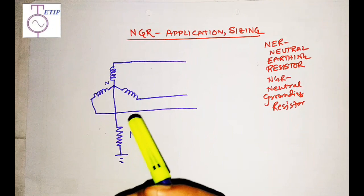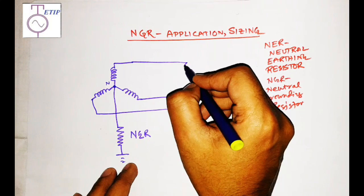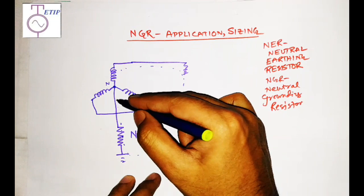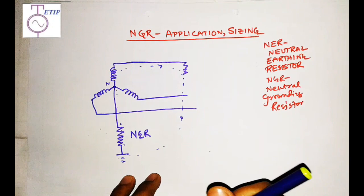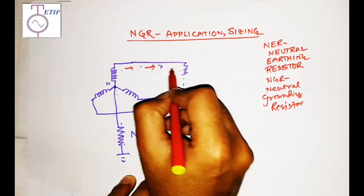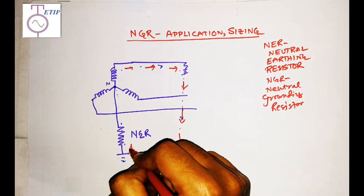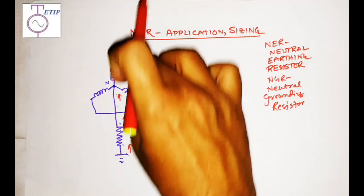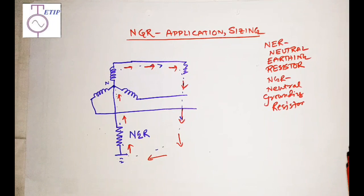For a transformer or alternator, if there is an earth fault on any phase, say this phase has faulted, then the earth fault current will flow from that point through earth, and from the neutral it will return to the source. If the neutral is solidly earthed, then the entire phase voltage will be imposed and a huge current will flow.